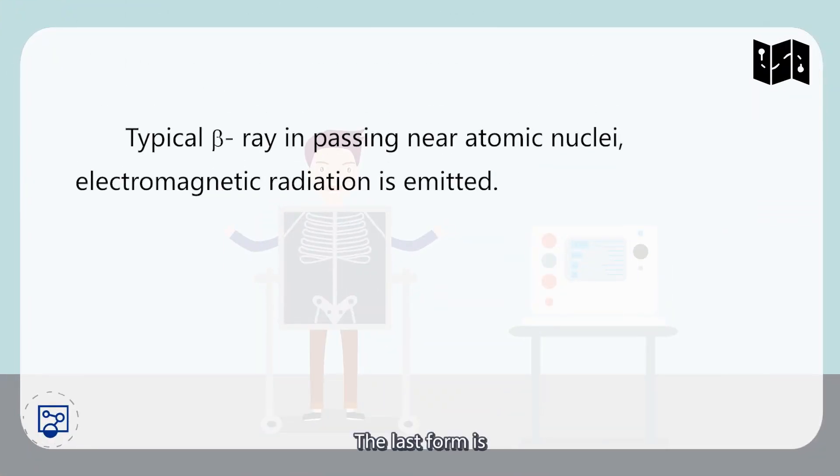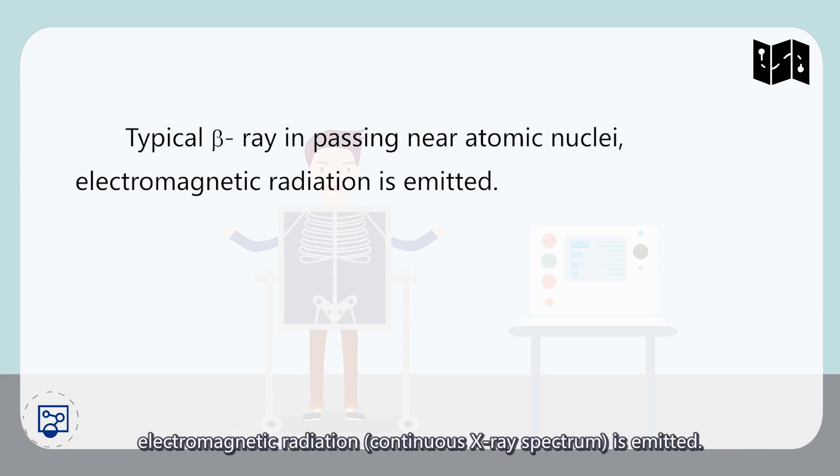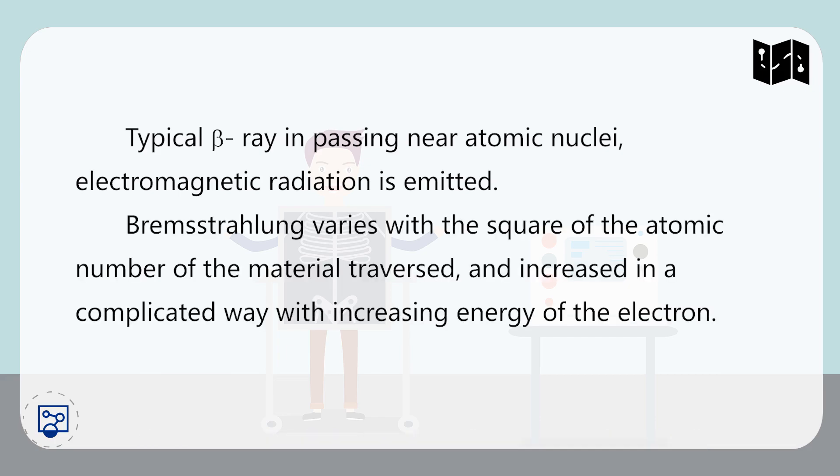And the last form we call Bremsstrahlung. The typical beta-minus ray in passing near atomic nuclei, electromagnetic radiation is emitted. Bremsstrahlung varies with the square of the atomic number of the material traversed, and increases in a complicated way with the increasing energy of electrons.